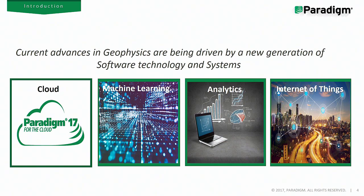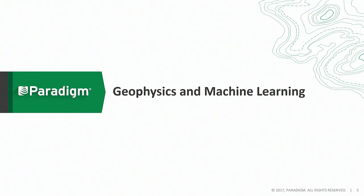As we move forward, we have to start looking at other trends impacting our software. For the first time, we have software impacting software — that is, the ability to deliver, develop, and support software in a different environment. That includes cloud, writing applications to take advantage of the rich library of machine learning algorithms, and making use of the Internet of Things to connect data we normally don't connect, whether that's sensor data from the surface with the subsurface.